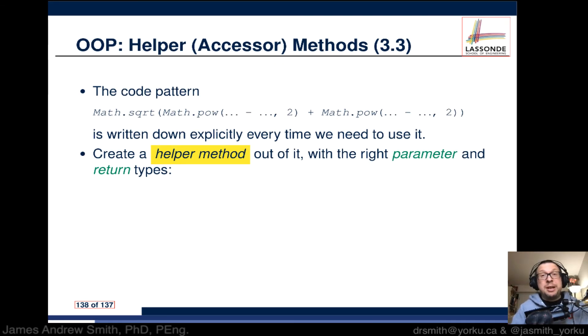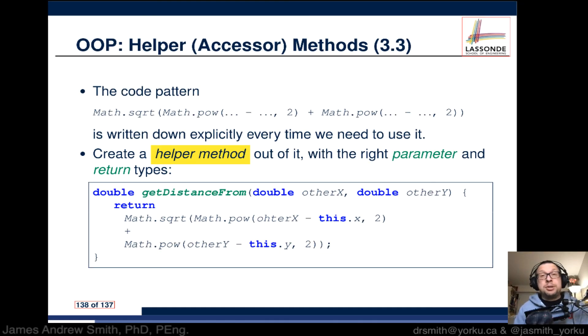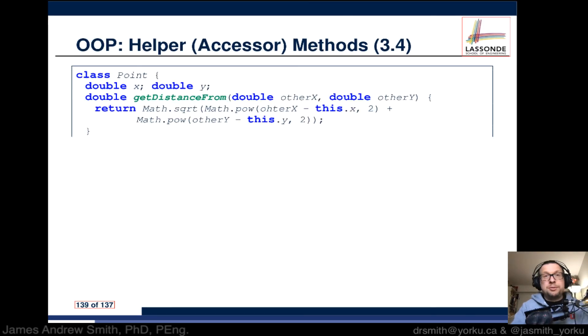What we should do is create a helper method that with the right parameters and return types will do the same thing. So for instance, get distance from double, double, other x, another y, and then there's your equation right there. Here's what we should do.